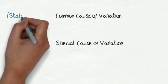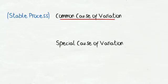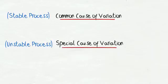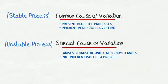Usually a stable process is influenced by a common cause of variation, while an unstable process is influenced by a special cause of variation. Let's see the difference between common cause and special cause of variation. A common cause of variation is present in all processes. It's inherent in a process over time. While a special cause of variation arises because of unusual circumstances, it's not an inherent part of a process.